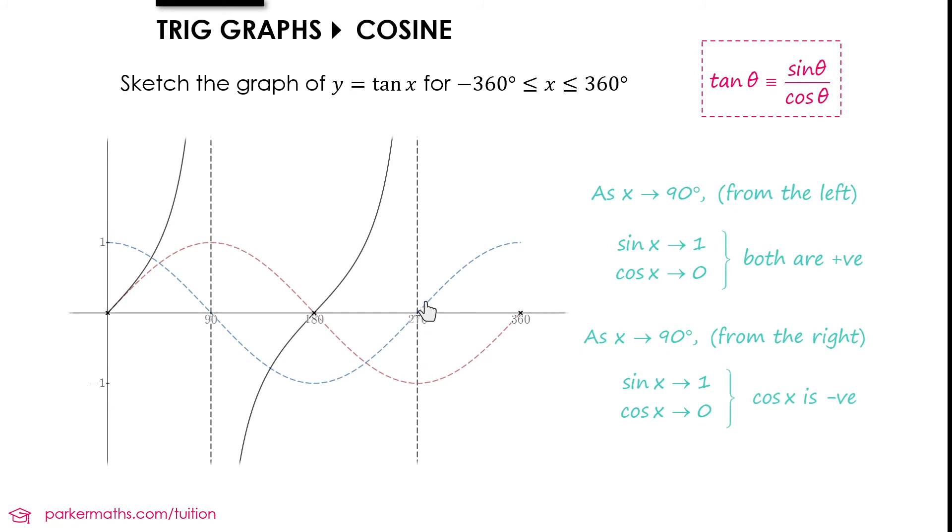To the right of 270, we have a number approaching 0 divided by a number approaching negative 1. We're going to be at infinity again, but this time it's a negative divided by a positive, so it will be negative infinity. Our curve comes from negative infinity and goes up to 360 at zero.